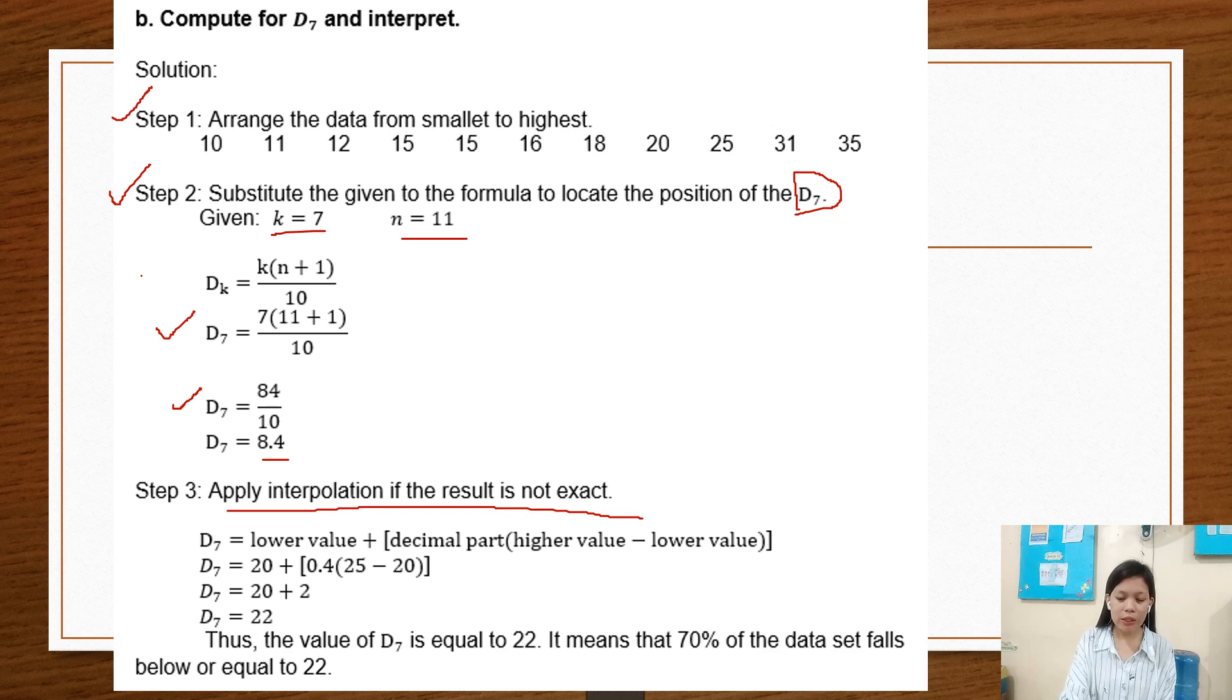Step 3: Apply interpolation if the result is not exact. D7 equals lower value plus 0.4 times higher value minus lower value. D7 equals 20 plus 0.4 times 25 minus 20, equals 20 plus 2, equals 22. Thus, the value of D7 equals 22. It means that 70% of the data set falls below or equal to 22.